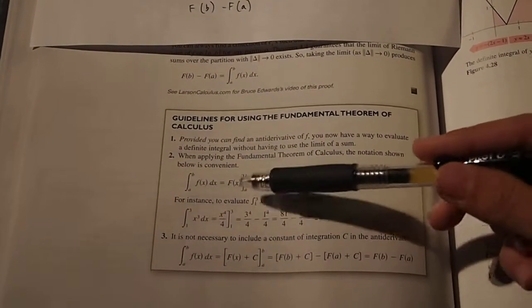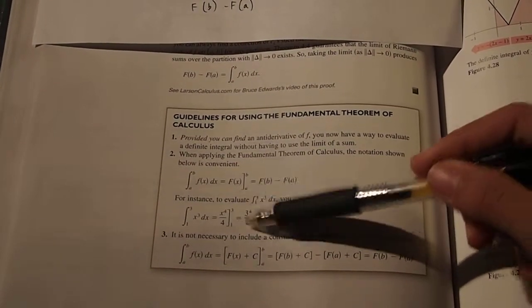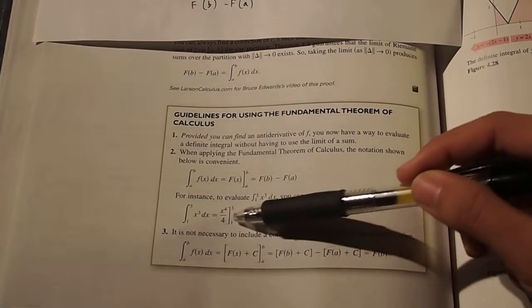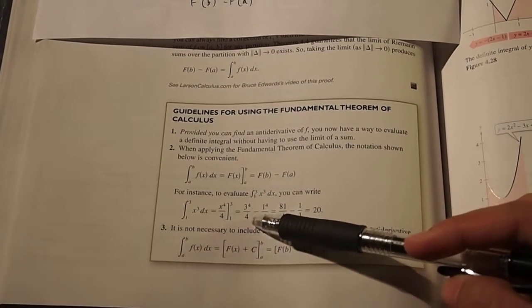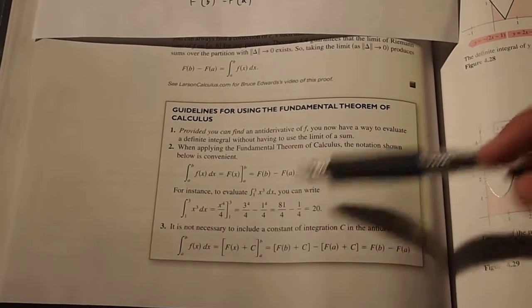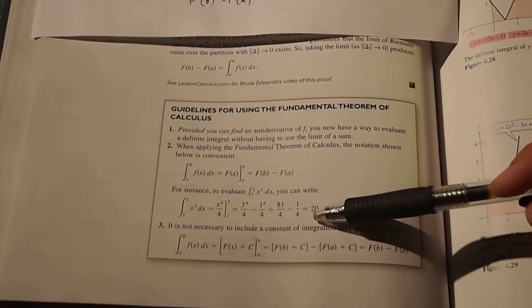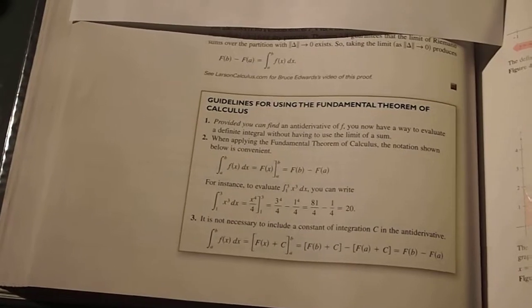Then afterwards, you need to plug in 3 for x and then 1 for x in this anti-derivative, so that's what they did here, so they have 3 to the 4th over 4 minus 1 to the 4th over 4, which is equal to 81 fourths minus 1 fourth, which is then equal to 20.